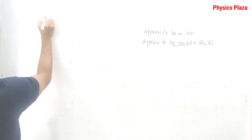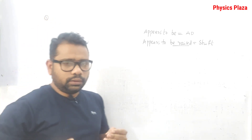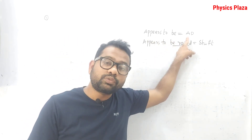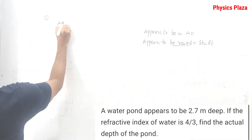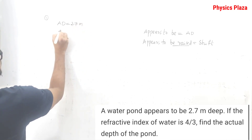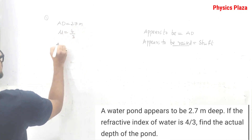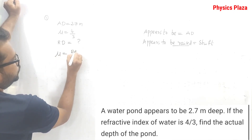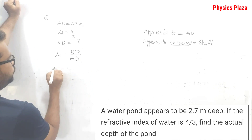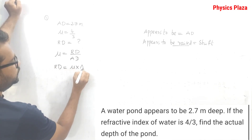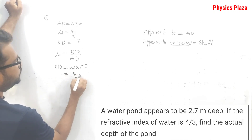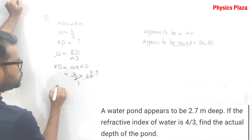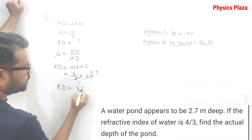First numerical: a pond's depth appears to be 2.7 meters — so apparent depth is 2.7 meters. The refractive index of water is 4/3. They ask us to calculate the actual, that is real depth. Using μ = real depth / apparent depth, real depth = μ × apparent depth = (4/3) × 2.7 = 4 × 0.9 = 3.6 meters.